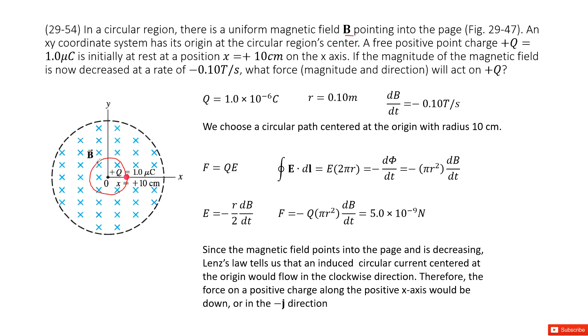And so inside this circle, we can see magnetic field is decreased. Now can you determine the induced current in this case?